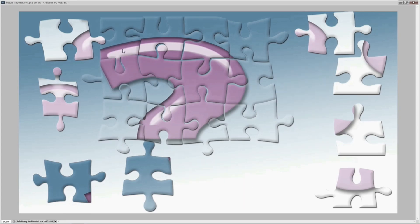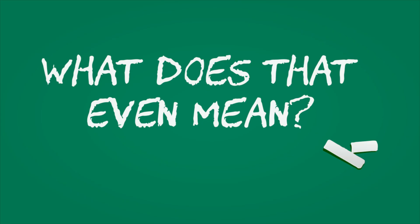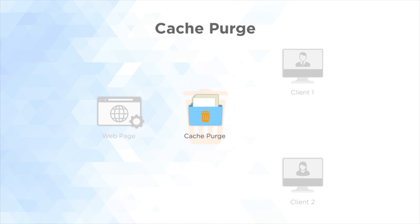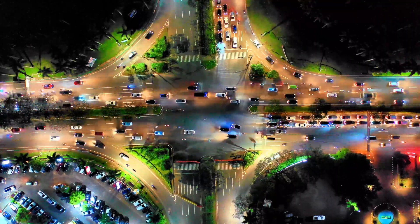But what does that mean? Basically, ESI lets you punch holes in a publicly cached page and then fill those holes with privately cached content. This is awesome because those holes in the page can be treated differently than the rest of the page — they can have different time-to-live values and can be purged at different times. With these holes, you can cache more of your page than before, resulting in a much faster site.